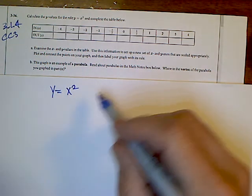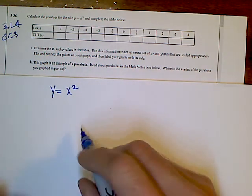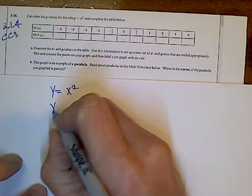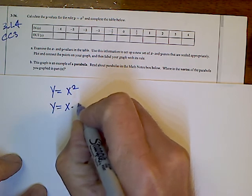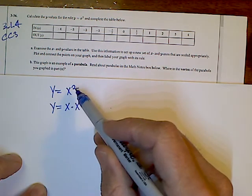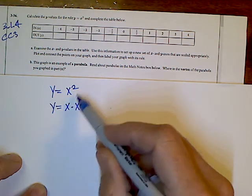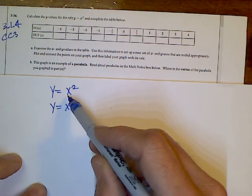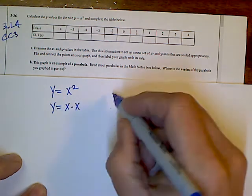Y equals x squared. Remember, y equals x squared is the same thing as y equals x times x. X squared is multiplying itself twice, multiplying by itself. So we've got x squared is x times x.